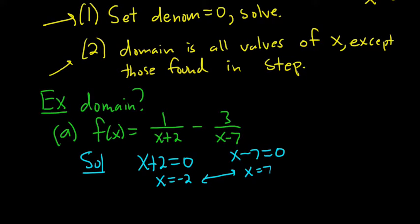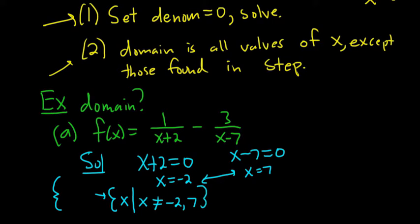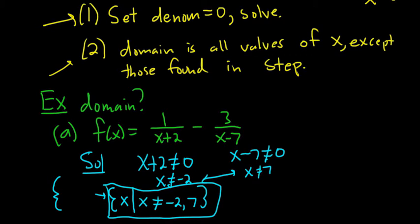To write that in set builder notation, it's the set of all x such that x is not equal to negative 2 and not equal to 7. Alternatively, you can write x plus 2 not equal to 0 and x minus 7 not equal to 0, giving the same result. You want to identify when the denominators are 0 and throw those values out of the domain.